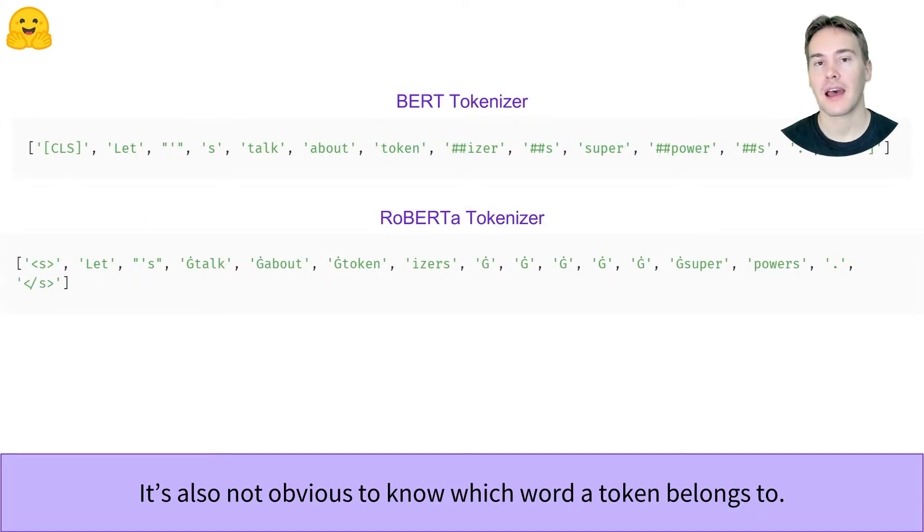For instance, RoBERTa adds this special G symbol to mark the tokens at the beginning of the word, and T5 uses this special underscore symbol for the same purpose.